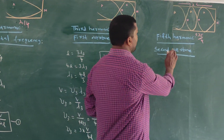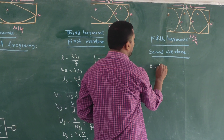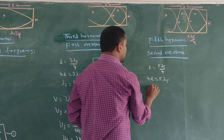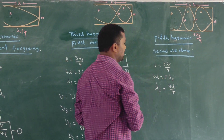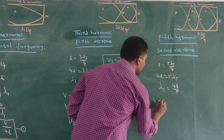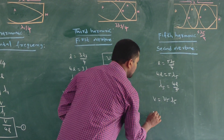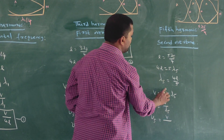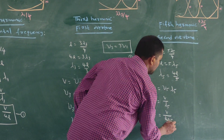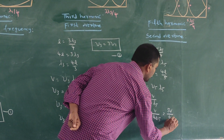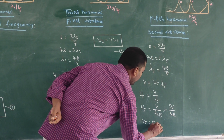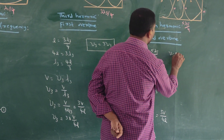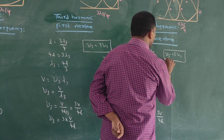The last case is the fifth harmonic. The length L is equal to 5λ₅/4, so 4L equals 5λ₅, giving λ₅ = 4L/5. Using v = ν₅λ₅, we get ν₅ = v/λ₅ = v/(4L/5) = 5v/4L. Since v/4L equals the fundamental frequency ν₁, we write ν₅ = 5ν₁. This is equation number 3.